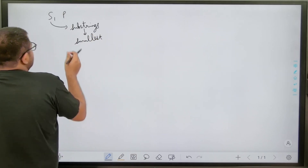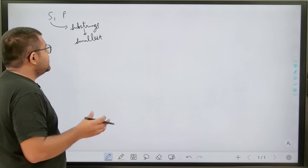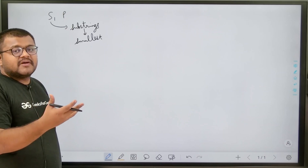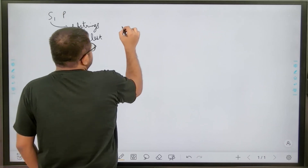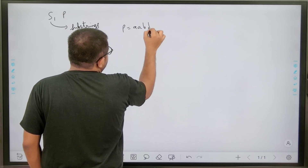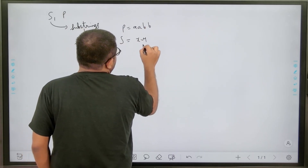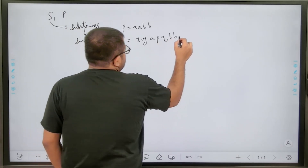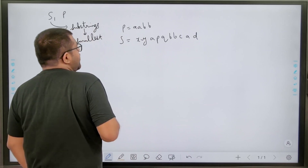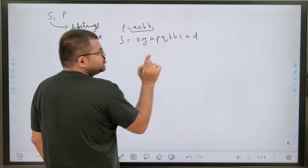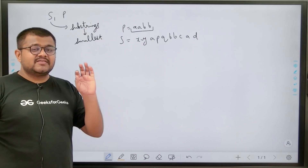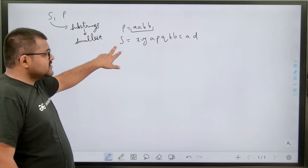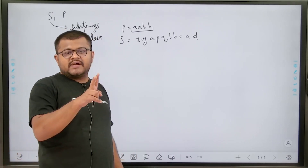What does containing all the characters of P mean? It means that even considering the duplicates, all those characters must be present in the substring of string S we are considering. For example, if P is A, A, B, B and S is X, Y, A, P, Q, B, B, C, C, A, D — then we need a substring which contains at least two A's and at least two B's. The count of duplicates must also be considered.